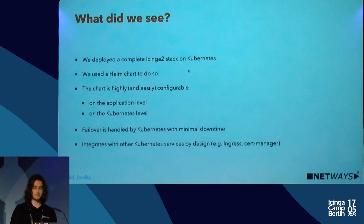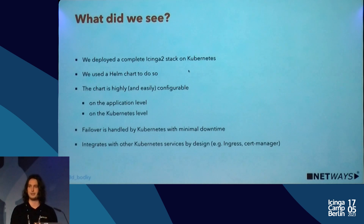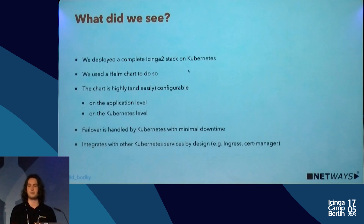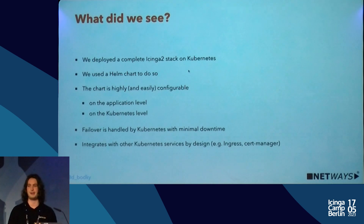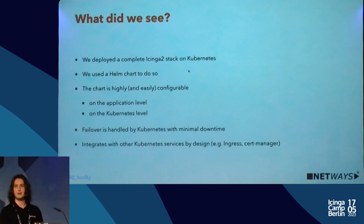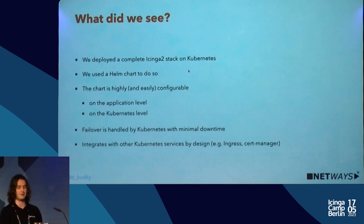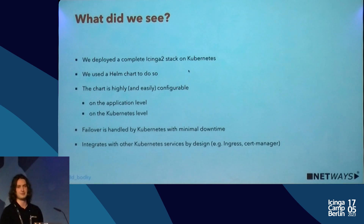What did we just see? We deployed a complete Icinga 2 stack with the Helm chart — you just need to dive into the documentation, create your values.yaml file, and you're ready to deploy all of this. The chart is highly configurable both on the application level — how Icinga Web and Icinga DB behave — and on the Kubernetes infrastructure level. Failover is handled automatically with minimal downtime, and the deployment integrates well with other Kubernetes services like ingress for reverse proxying and certificate creation for Icinga Web 2.